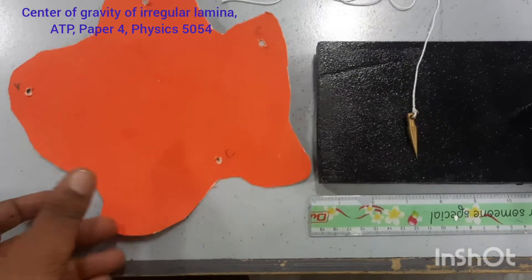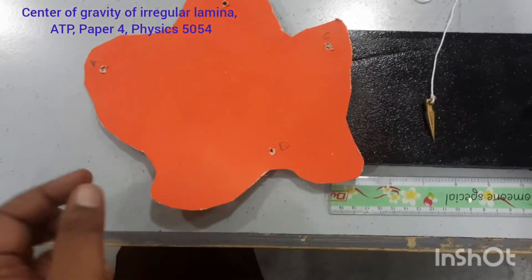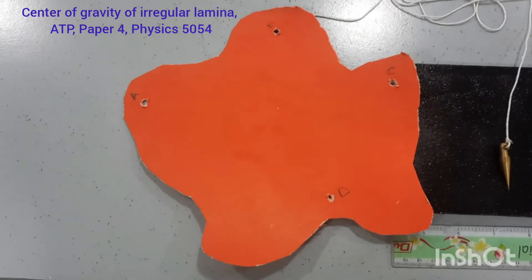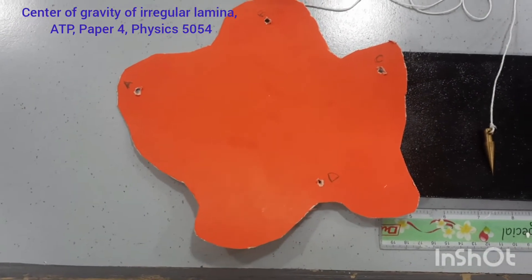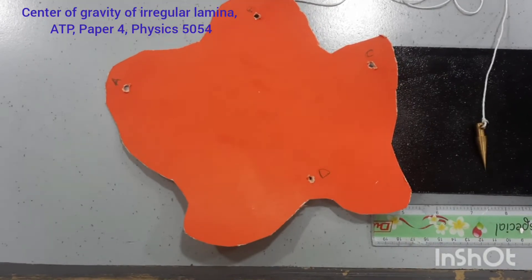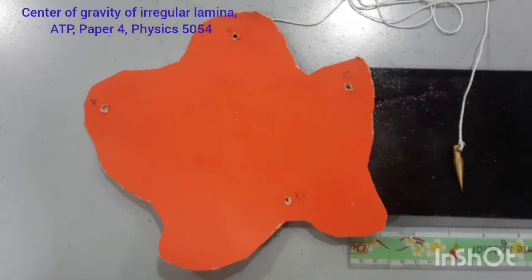The experiment is very simple. We have an irregular shaped lamina and we want to find out the center of the gravity of this lamina.